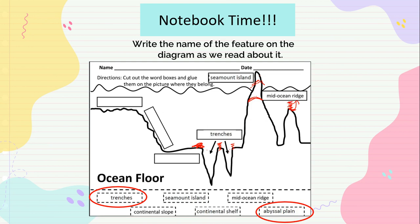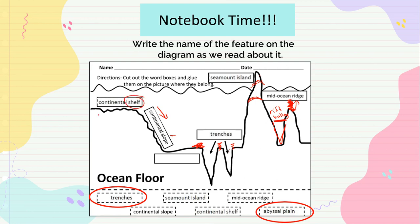The mid-ocean ridge is bigger and makes a whole line from the side, with a V-shape called a rift valley in the middle. Just like we get a valley above the ground between mountains, we get a valley under the ground called a rift valley. The continental slope slides down, the continental shelf is straight, and the abyssal plain is the flattest piece.